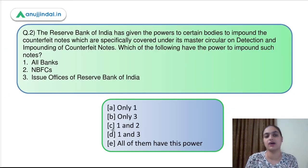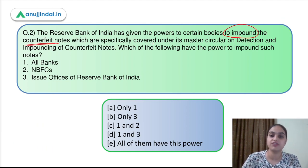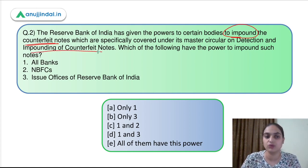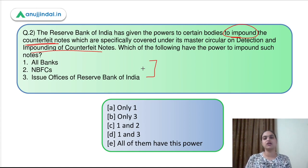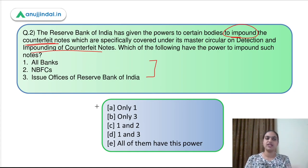Question number two: The Reserve Bank of India has given powers to certain bodies to impound counterfeit notes, specifically covered under its master direction or master circular on detection and impounding of counterfeit notes. Which of the following have the power to impound such notes — is it banks, NBFCs, or only the issue offices of RBI? Before answering, let's discuss these directions and the circular related to counterfeit notes.